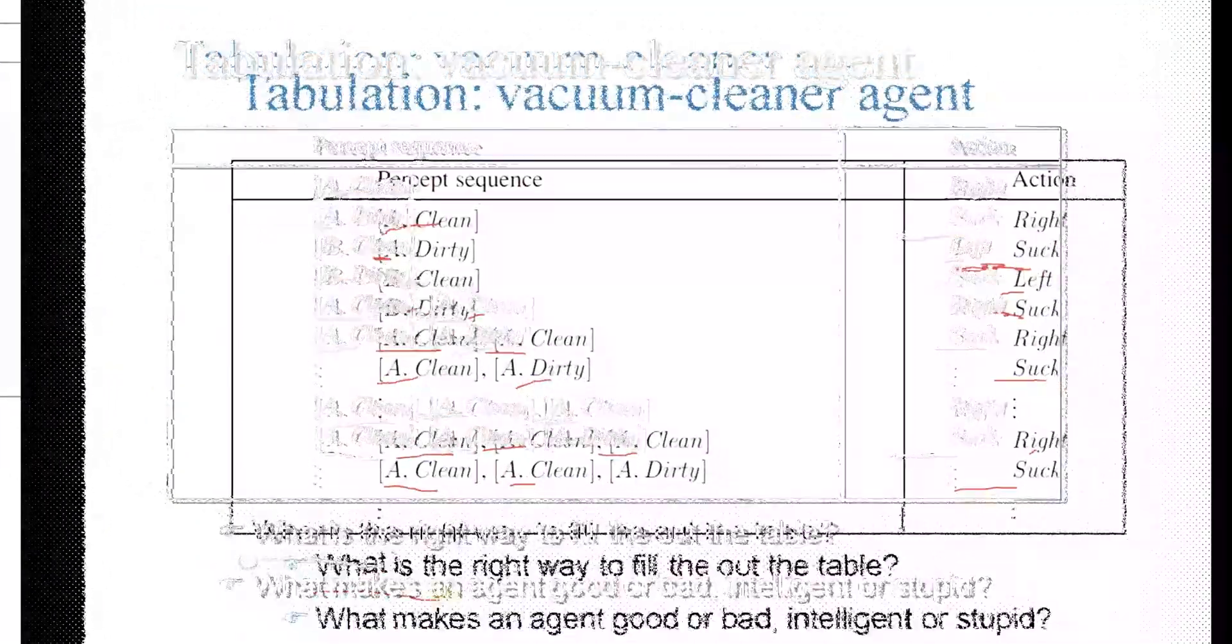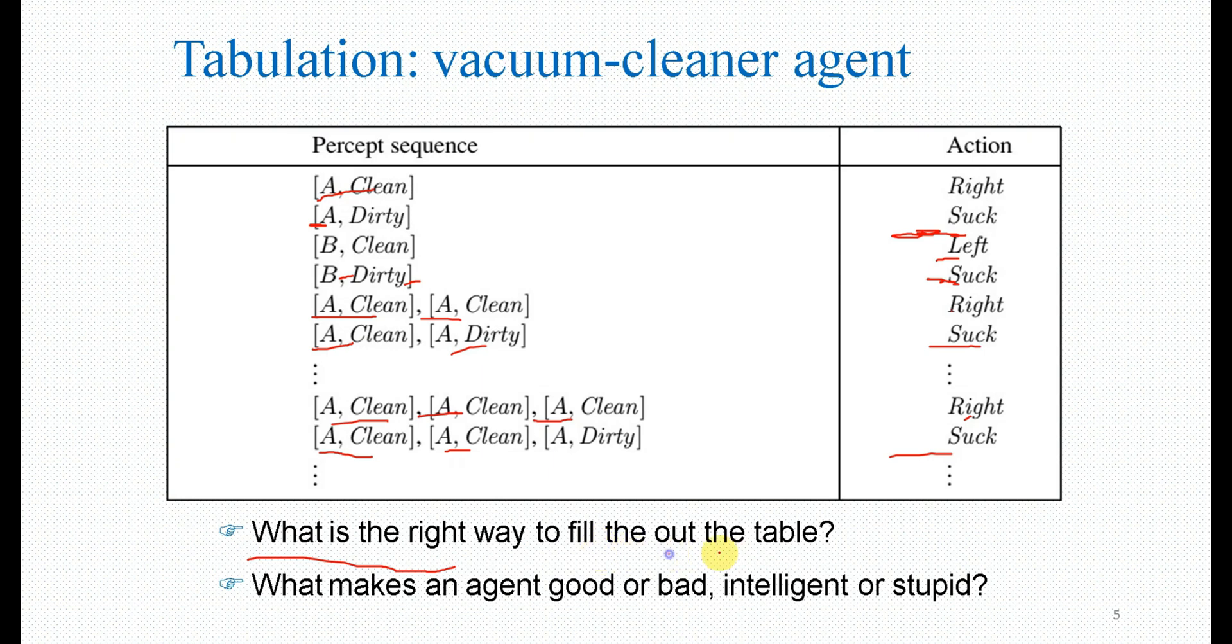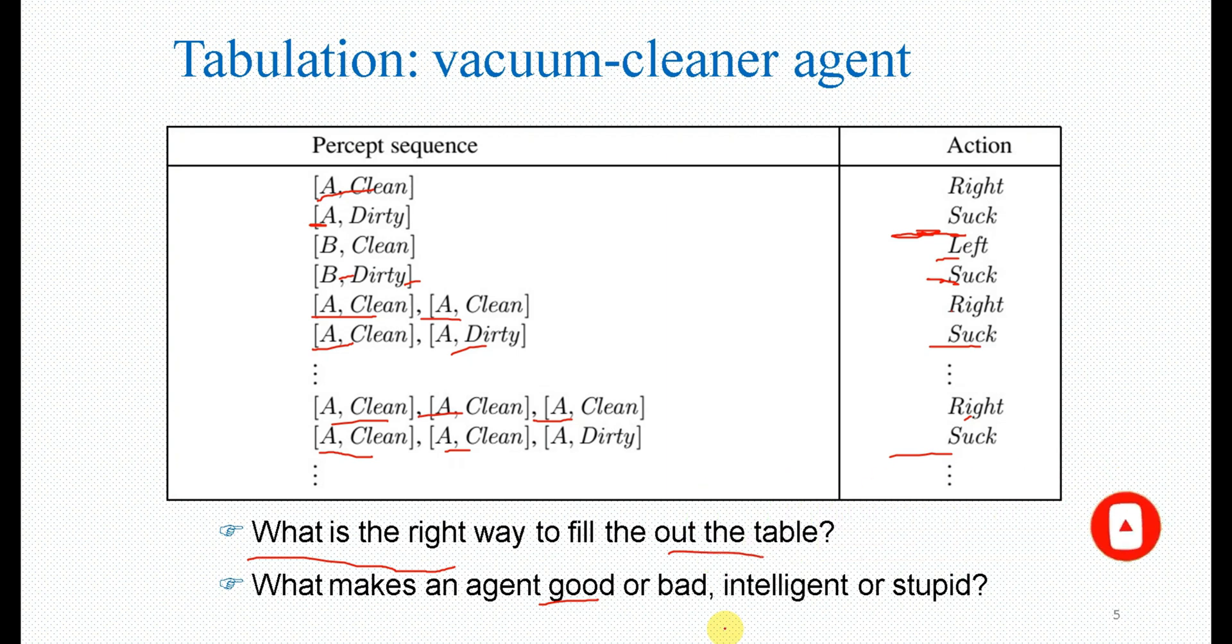There are two questions here. What is the right way to fill out the table? And what makes an agent good or bad, intelligent or stupid? What makes an agent good or bad, or intelligent or stupid?